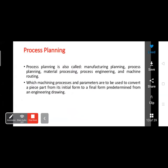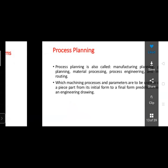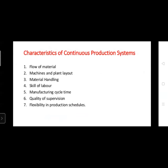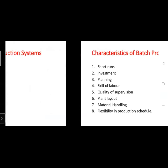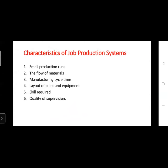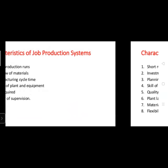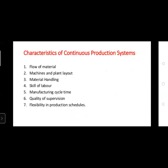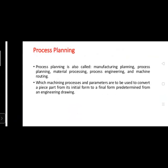In the last class on Friday, we started what is meant by PPC and the different types of production systems. We learned about three types: job production, batch production, and mass production. We also learned about the characteristics of each type of production system.